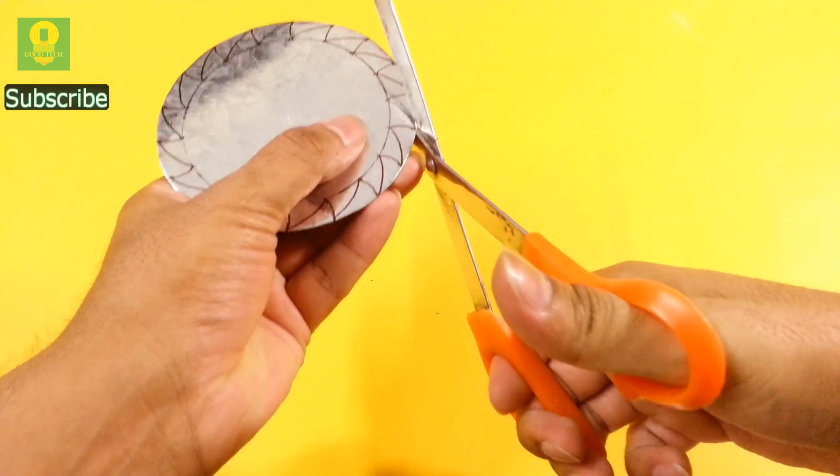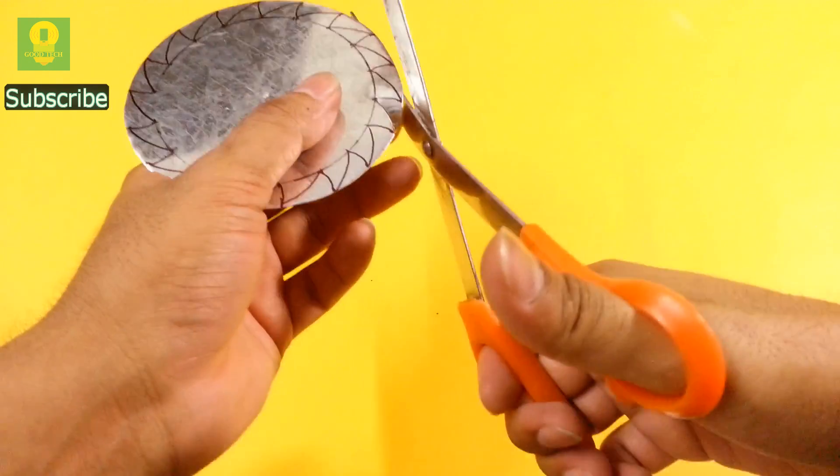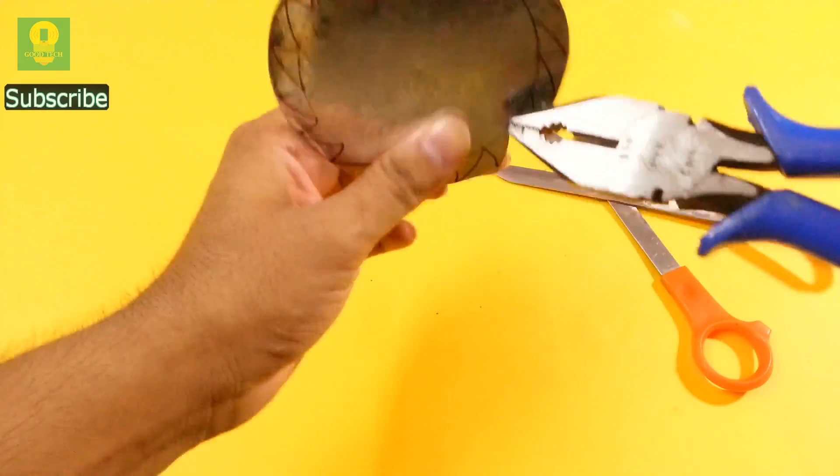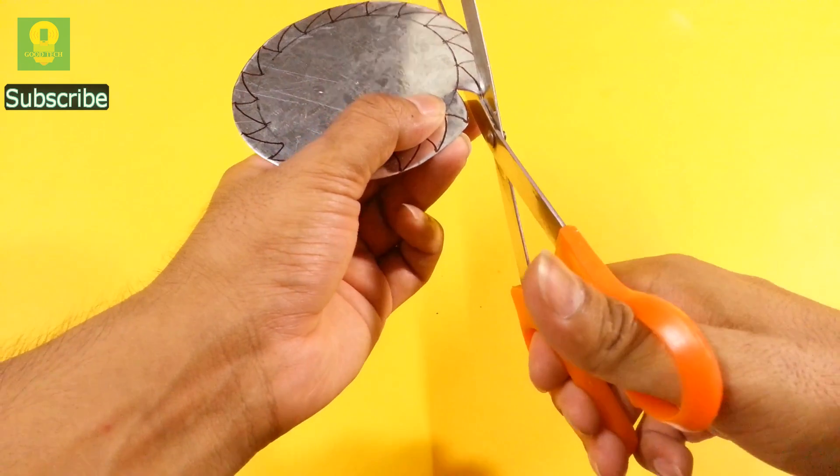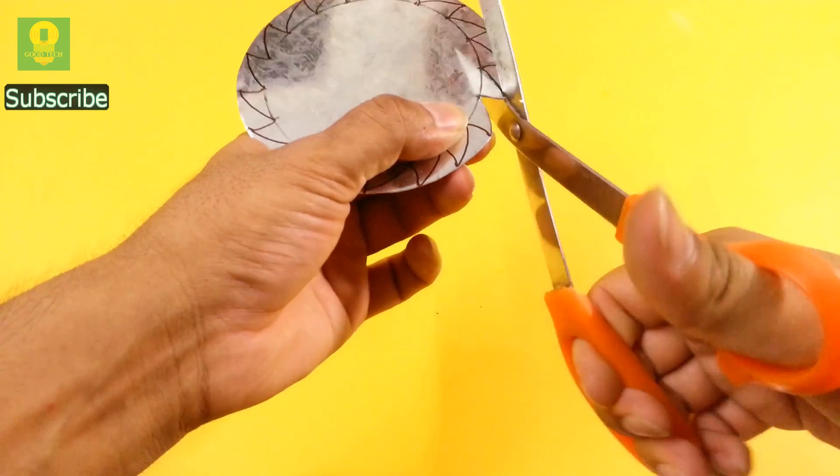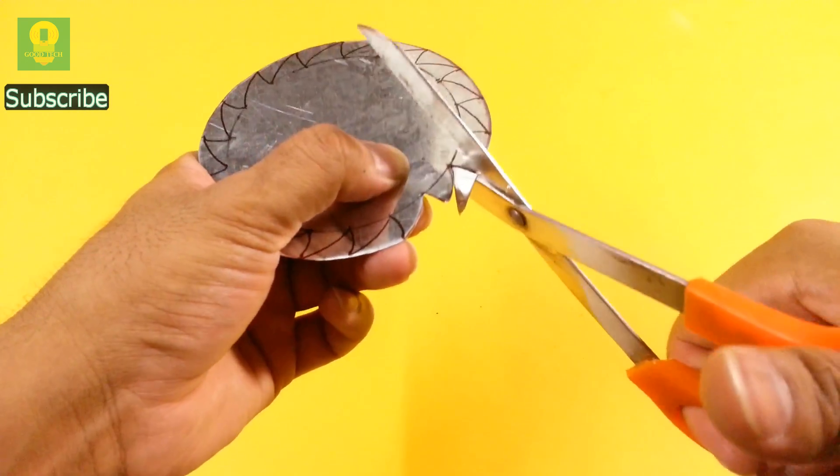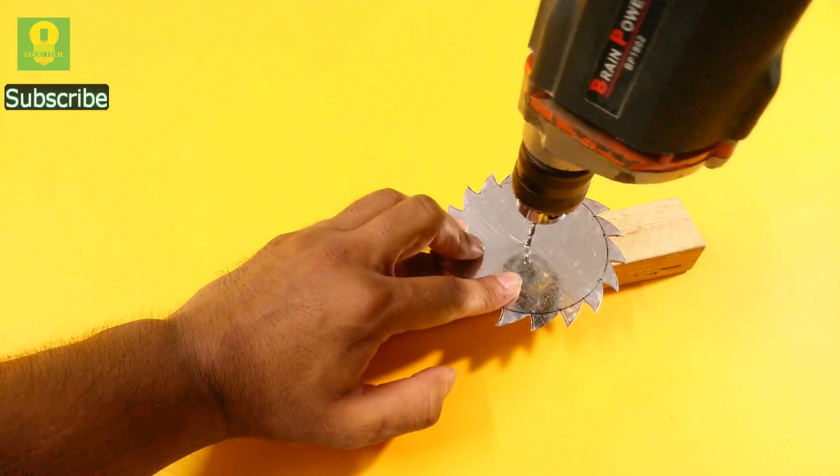Using a metal cutting scissor, cut the blade very carefully. Fill a hole in the center of the blade.